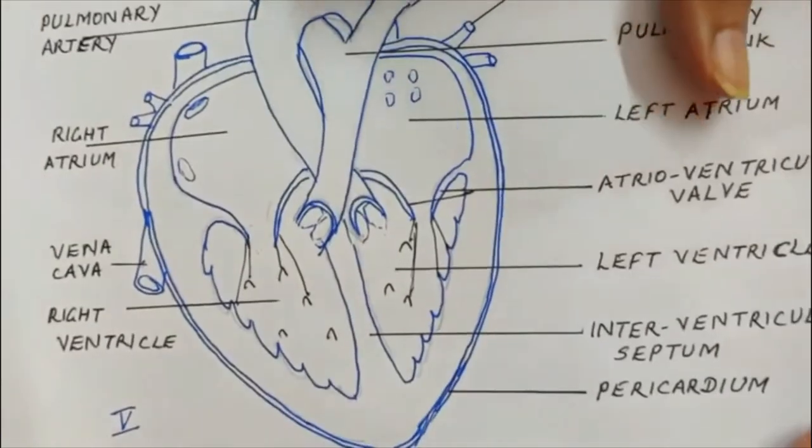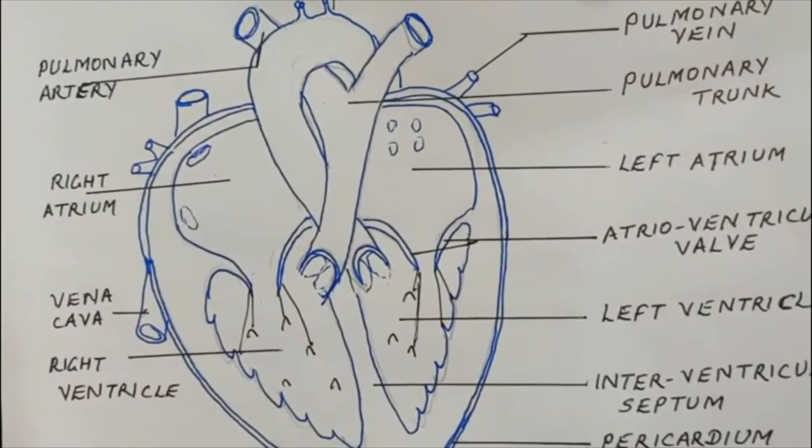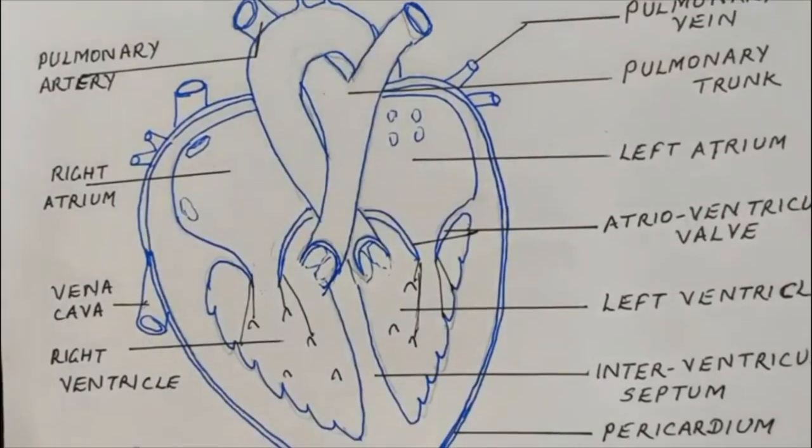You have the left atrium, pulmonary trunk, and the pulmonary vein. So this is how you're going to complete your diagram. Okay, this is a complete picture. Thank you.